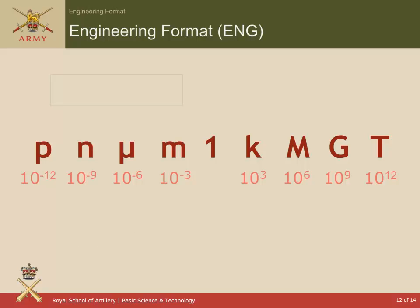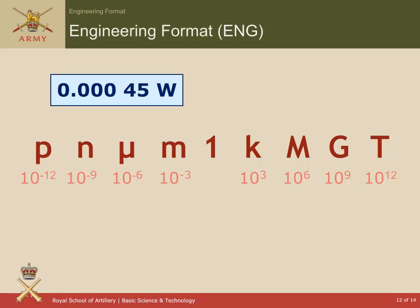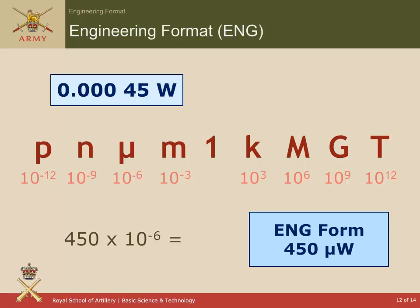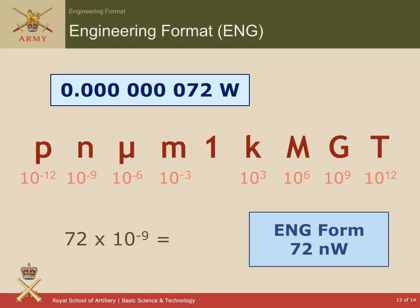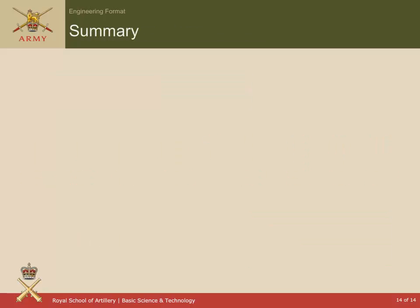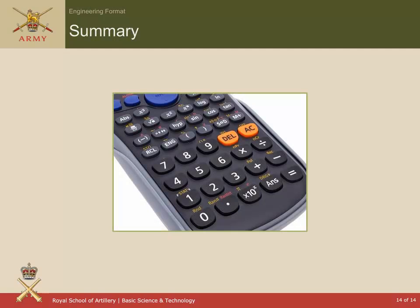Continuing on, 0.00045 is going to be 450 times 10 to the power of minus 6, so 450 microwatts. And an even more awkward number can be represented by 72 times 10 to the power of minus 9, or 72 nanowatts. If you enter all those zeros into your calculator, you will certainly have an ENG button on your calculator which will convert it to a power of 10 — well worth using.